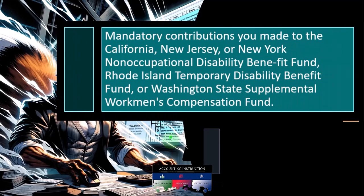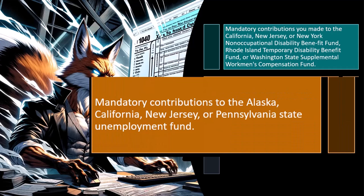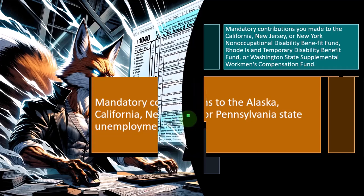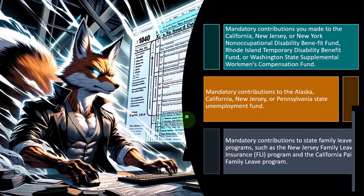Mandatory contributions you made to the California, New Jersey, or New York non-occupational disability benefit fund, Rhode Island temporary disability benefit fund, or Washington state supplemental workman's compensation fund — those are specialty areas if they apply to you. Also included are mandatory contributions to the Alaska, California, New Jersey, or Pennsylvania state unemployment fund, and mandatory contributions to state family leave programs such as the New Jersey Family Leave Insurance FLI program and the California Paid Family Leave program.